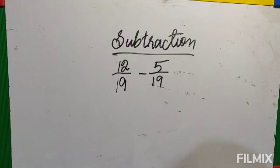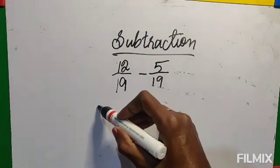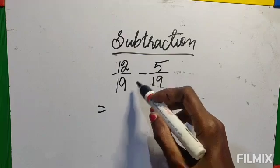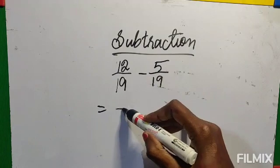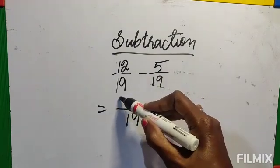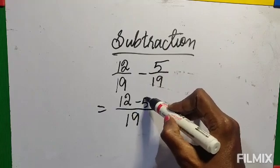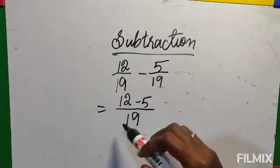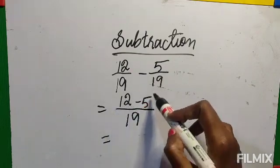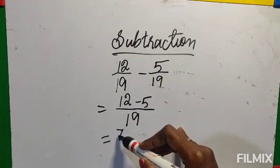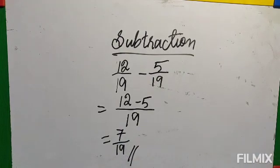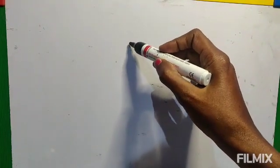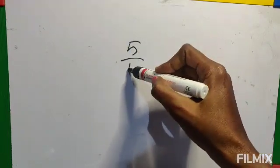Now let's see subtraction. Subtraction uses the same method. Take 12 by 19 minus 5 by 19. Both denominators are the same — only like fractions we can do addition and subtraction. Take the common denominator, then write the numerators: 12 minus 5. How to subtract the numerator: 12 minus 5 equals 7. Write the denominator as it is. The answer is 7 by 19.